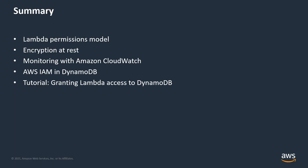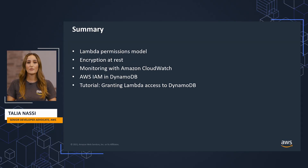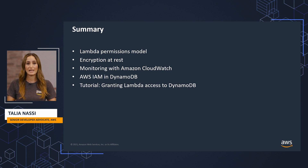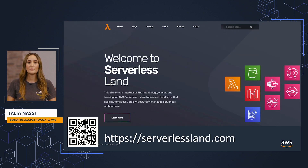In this video, you learned about the Lambda permissions model. You also went through a tutorial of how to grant AWS Lambda access to Amazon DynamoDB. You learned about encryption at rest with DynamoDB, using IAM policy conditions for fine-grained access control, and AWS Identity and Access Management in DynamoDB. To learn more about Lambda and DynamoDB, head to serverlessland.com, where you'll find more content from me and my team. I'm Tali Anasi. Thanks for tuning in.